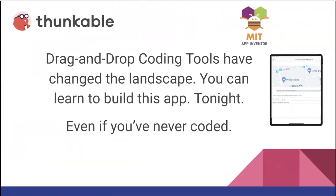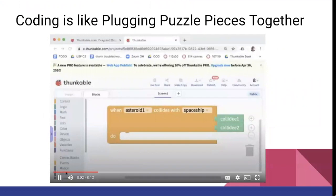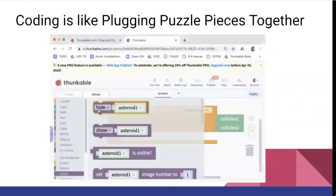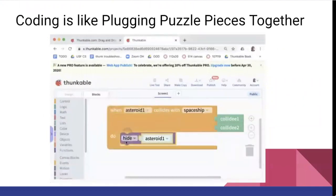Fortunately things have changed dramatically. Thunkable has created an easy-to-use drag-and-drop interface for coding. Sometimes they call it no-code or low-code because it's visual in nature, but it's real coding and the bar to entry has been lowered significantly. With Thunkable, coding is more like plugging puzzle pieces together. It's literally the funnest, fastest way to learn to code, and even if you are a coder you can build apps very quickly.